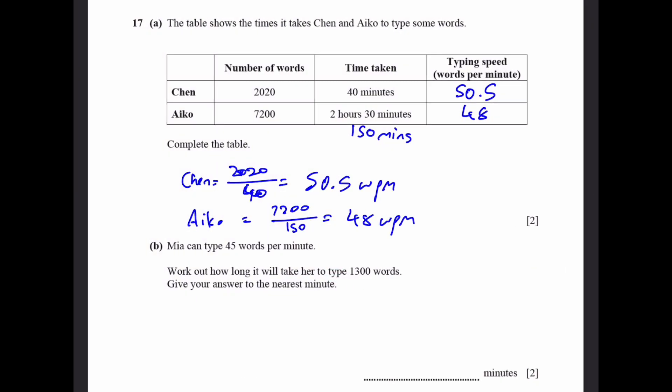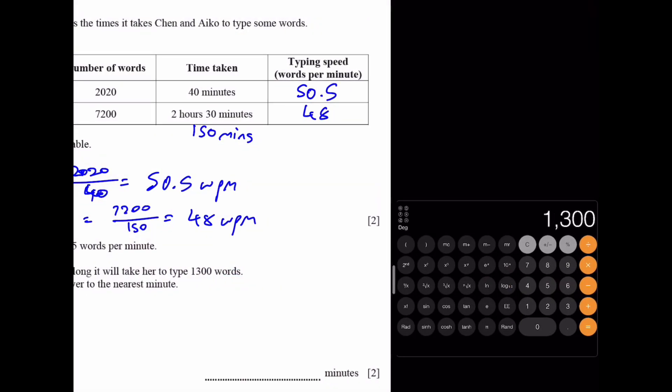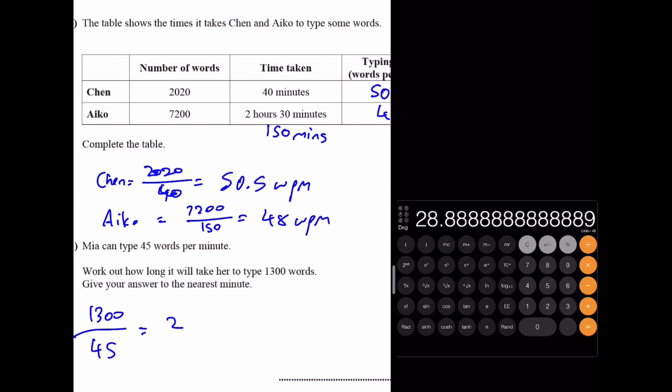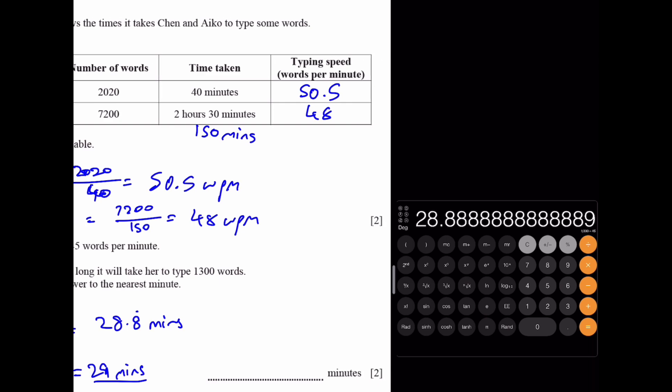Part b. Mia can type 45 words per minute. Work out how long it'll take her to type 1,300 words. Give your answer to the nearest minute. We do 1,300 divided by 45. We get 28.88 minutes. I'm going to round this to the nearest minute. So it'll be 29 minutes. That's our answer.